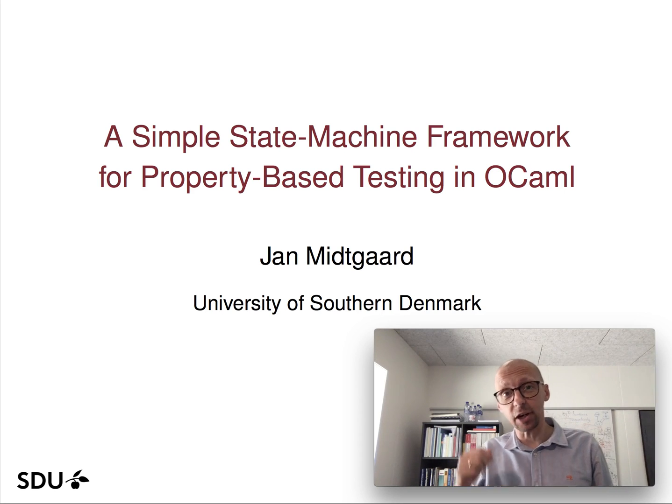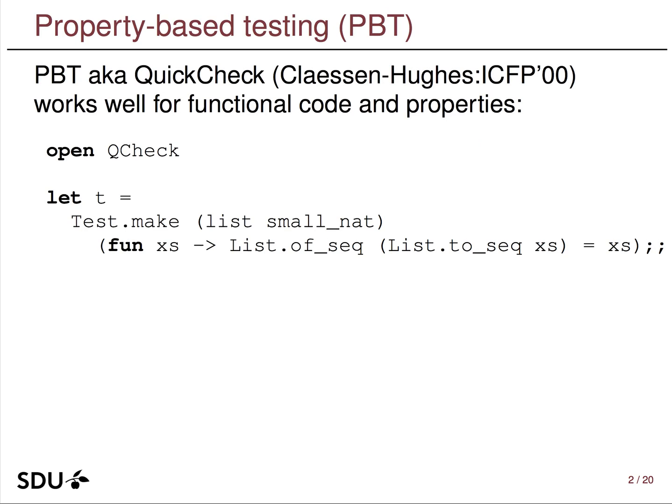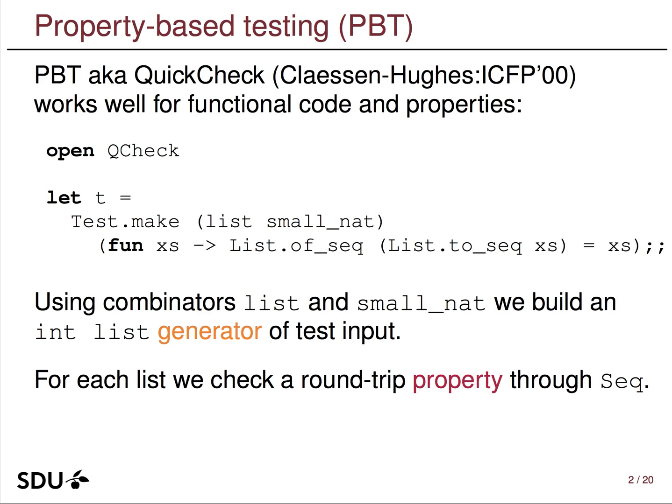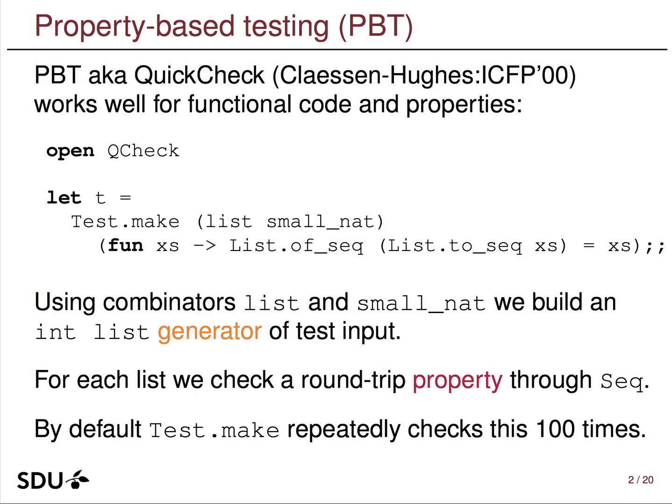I'd like to tell you about a little state machine framework for property-based testing. Property-based testing, or QuickCheck, is usually presented with an example along these lines. Here I'm using the QCheck framework for OCaml. A test in this setup requires two things: a generator and a property. The generator is composed with combinators to produce integer lists, and for each such list I check the property that converting it to a sequence and back again gives something structurally equal to the original.